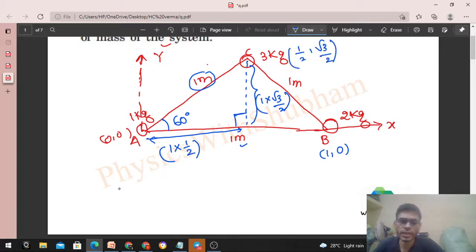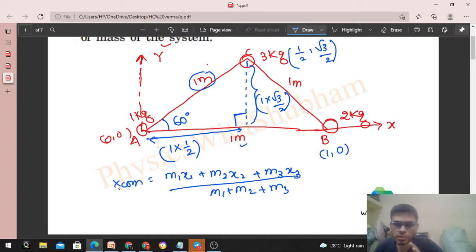We can easily find out the coordinate of center of mass of this system. X-coordinate of center of mass will be (m₁x₁ + m₂x₂ + m₃x₃) / (m₁ + m₂ + m₃), which is nothing but Σmᵢxᵢ / Σmᵢ.